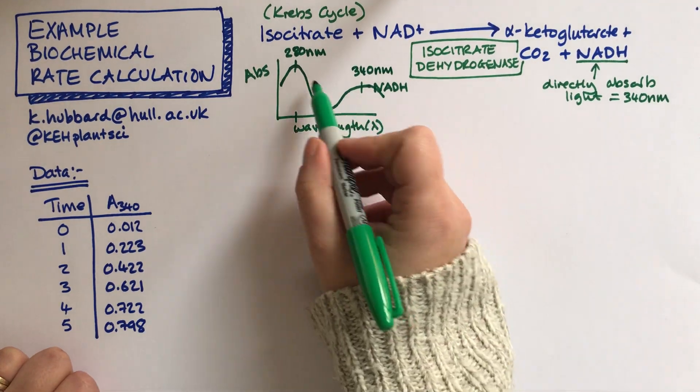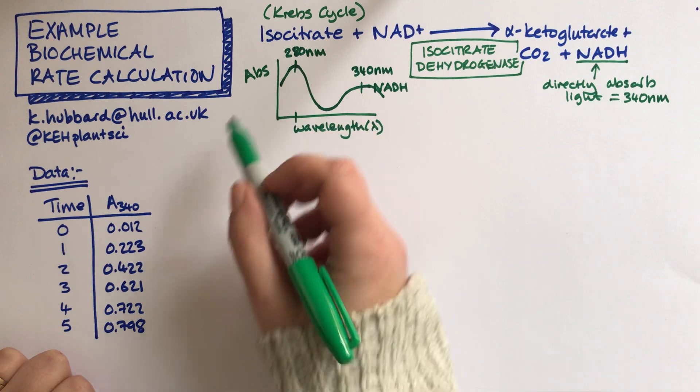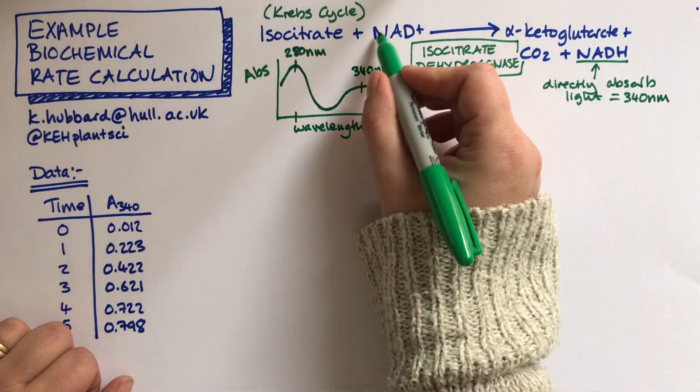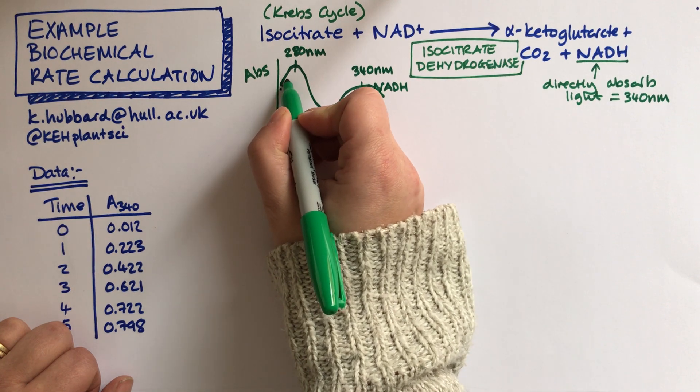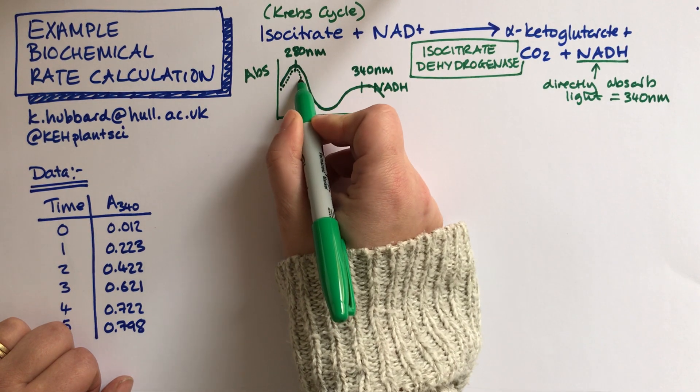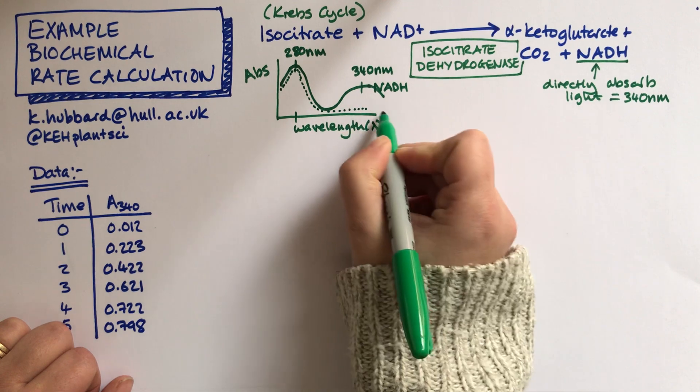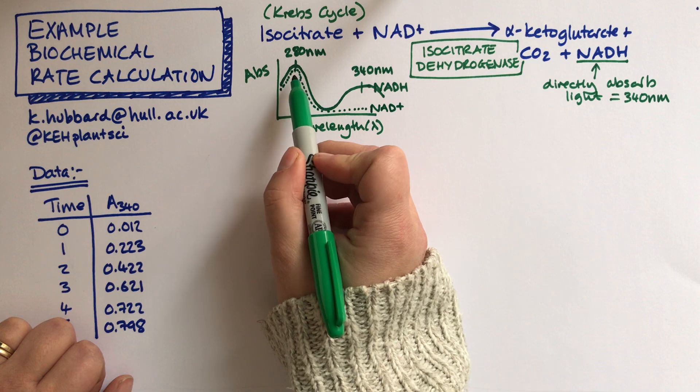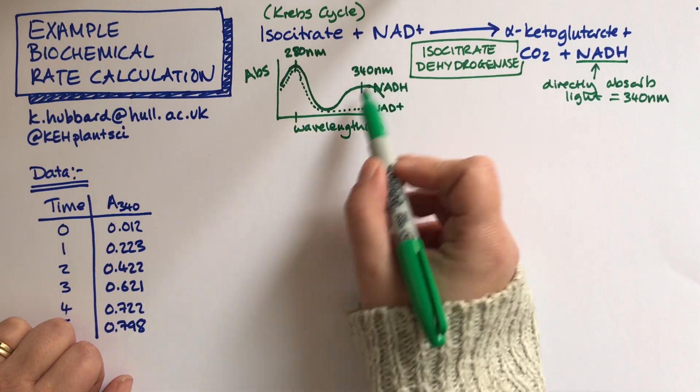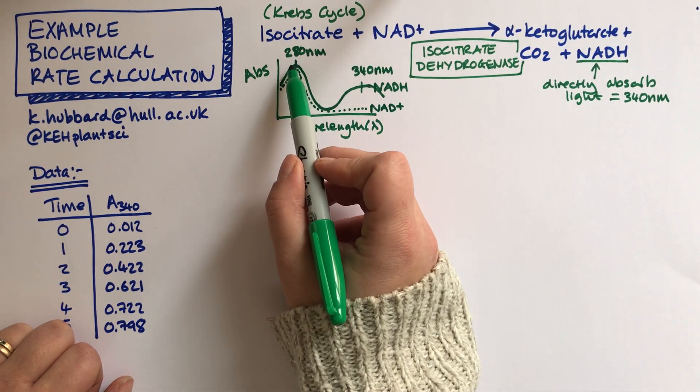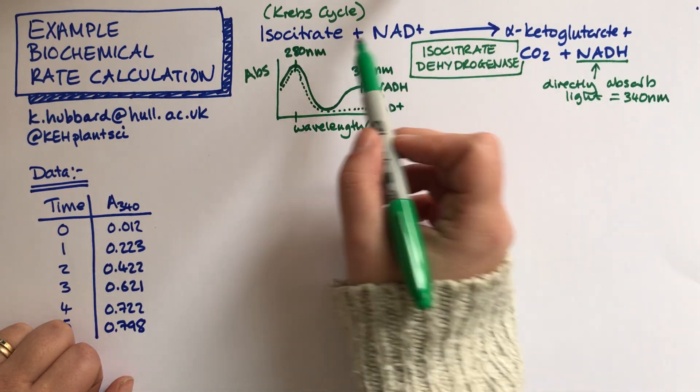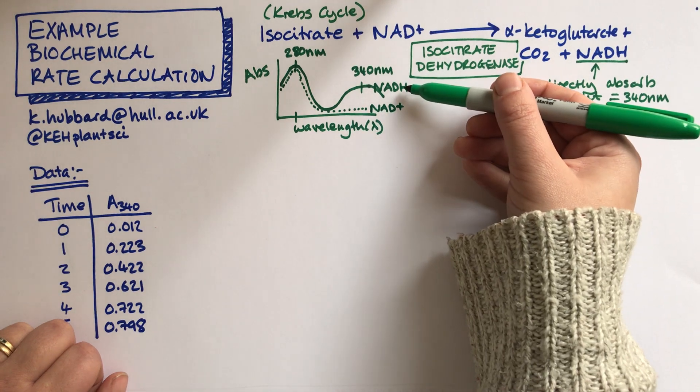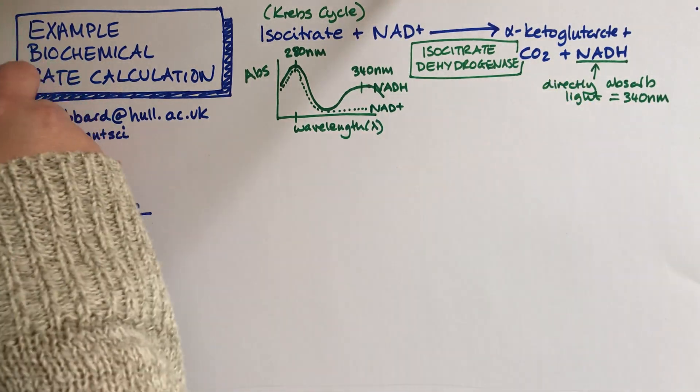You might be asking well why don't we measure it at 280 nanometers that seems like a bigger peak. Well it's because NAD plus also absorbs light. NAD plus also absorbs at 280 but it doesn't absorb at 340. So if we measured at 280 we'd be measuring both things all the time, but if we measure at 340 then we can selectively measure NADH in the spectrophotometer.